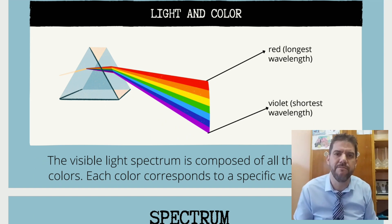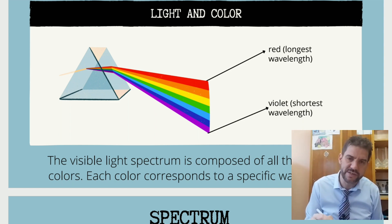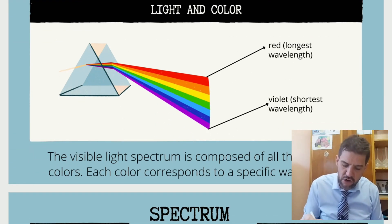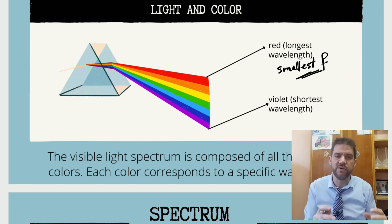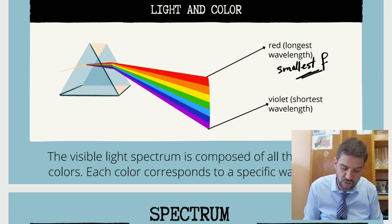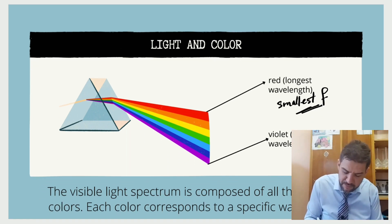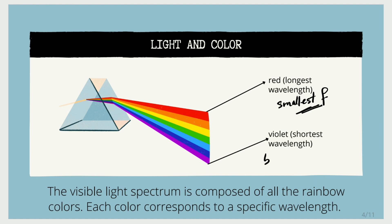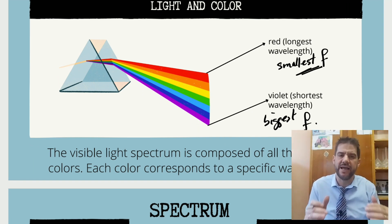This is very important to have in mind when we speak about red shift and blue shift. You need to remember that red color, which is on one end of the spectrum, has the longest wavelengths and therefore the smallest frequency. You need to know that wavelength and frequency are inversely proportional to each other. The violet side, towards the blue end, has the shorter wavelengths and therefore the largest frequency. Each color has its own frequency and its own wavelength.